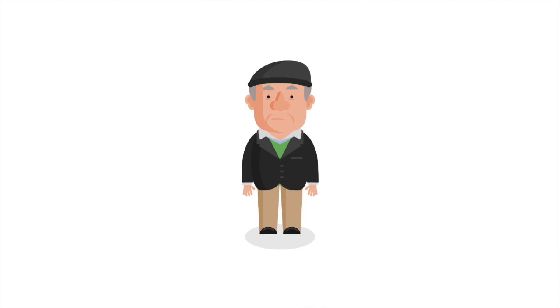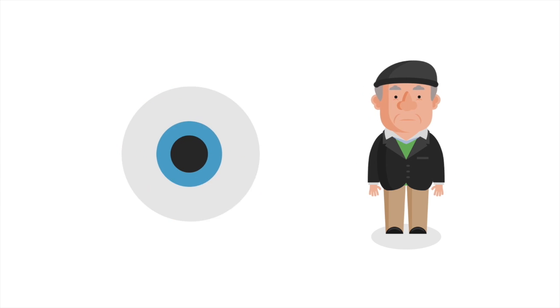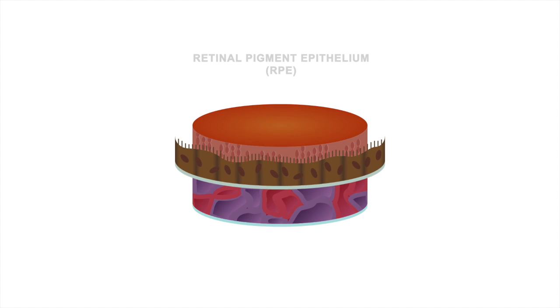Hey Mac, do you know what happens to the eye with macular degeneration? Macular degeneration affects a special layer of cells in the back of the eye called the RPE.